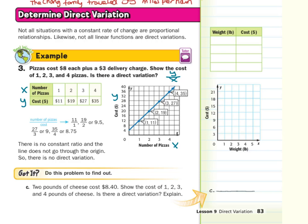Do we got it? Two pounds of cheese cost $8.40. Show the cost of 1, 2, 3, and 4 pounds of cheese. Is there direct variation? Explain. The first thing we need to do is to complete the table.